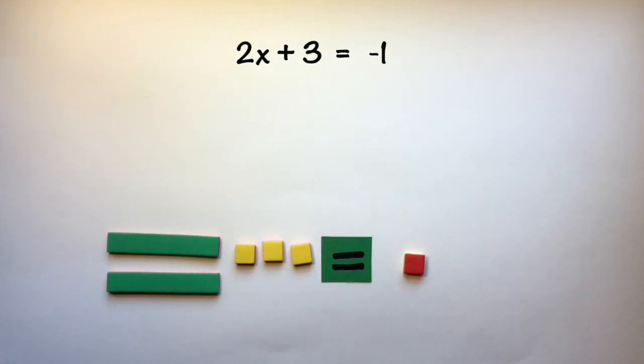Which means we need to remove 3 from the other side of our equation. In order to do so, we're going to need to add in some zero pairs. Remember that we can add in as many zero pairs as we want at any point in time.